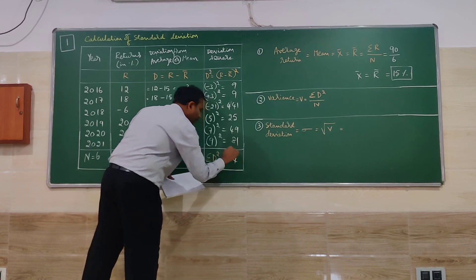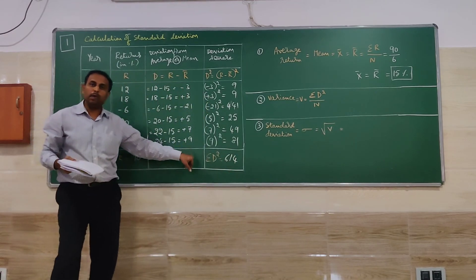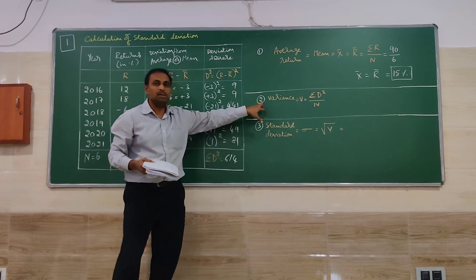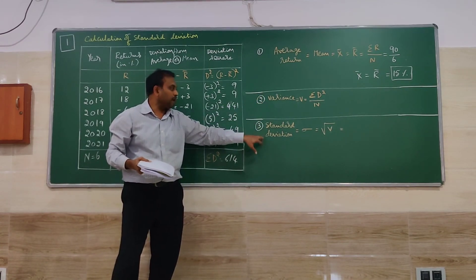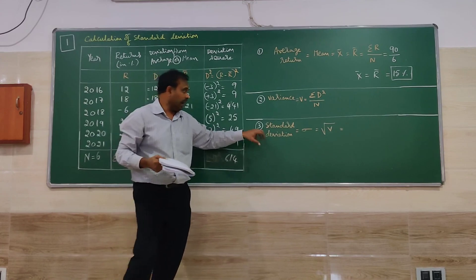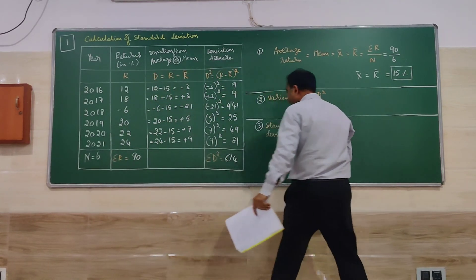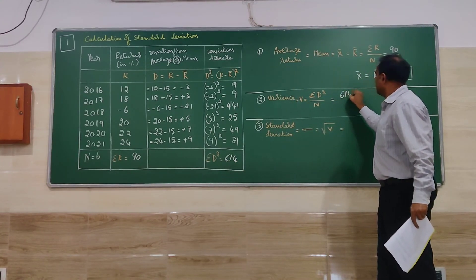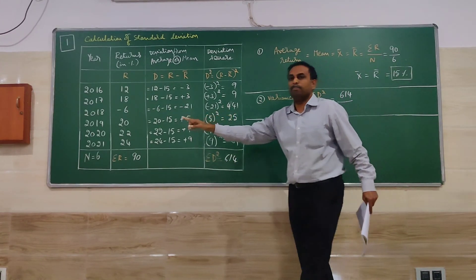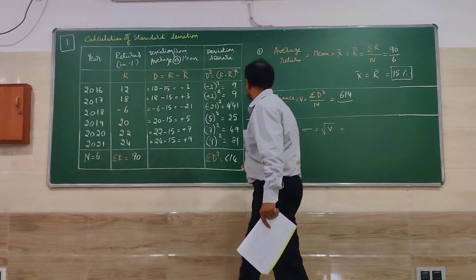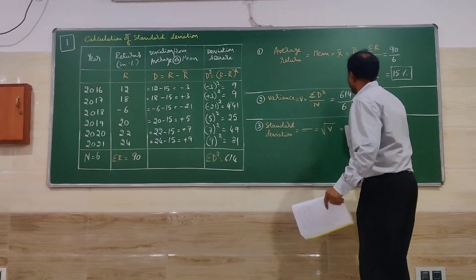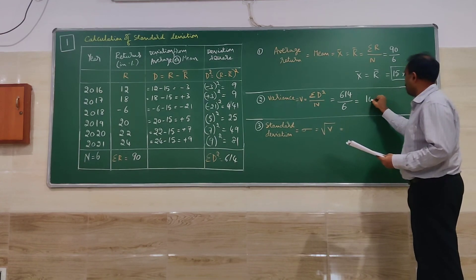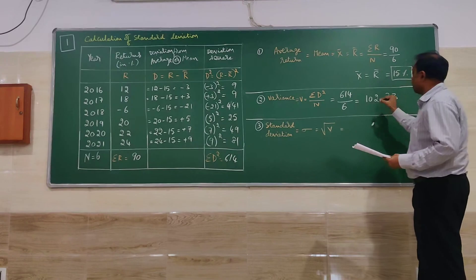So this has to be taken for calculation of variance. After finding the variance we have to go for standard deviation. So step number 2 is variance. Summation D square 614 divided by N, that is 6. So variance is going to be 102.3.